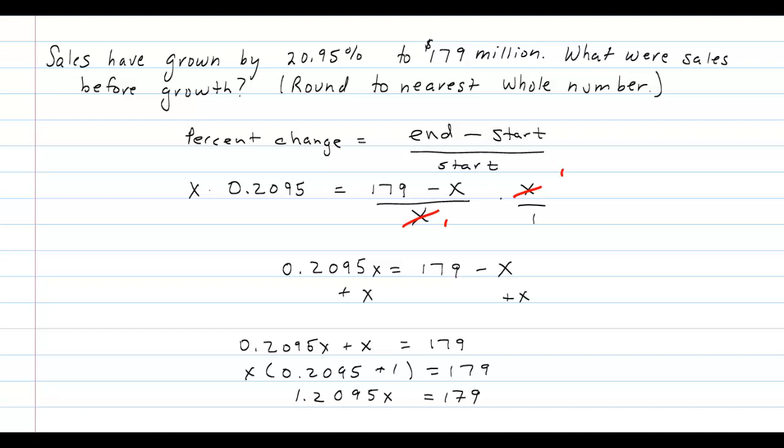And now what I need to do is divide both sides by 1.2095 to get x completely by itself. And when I do that,